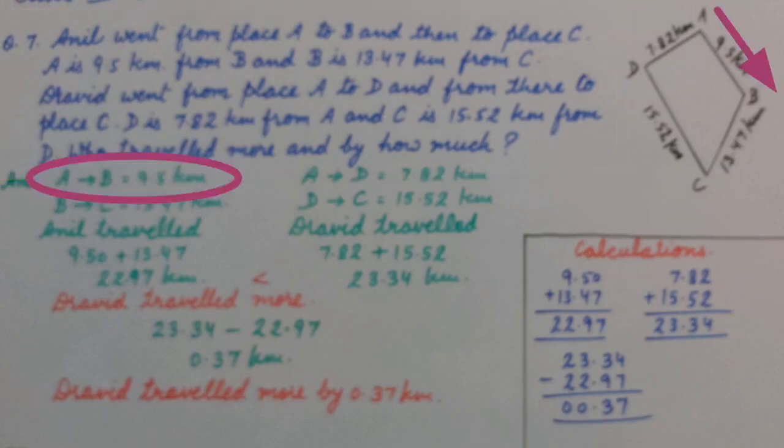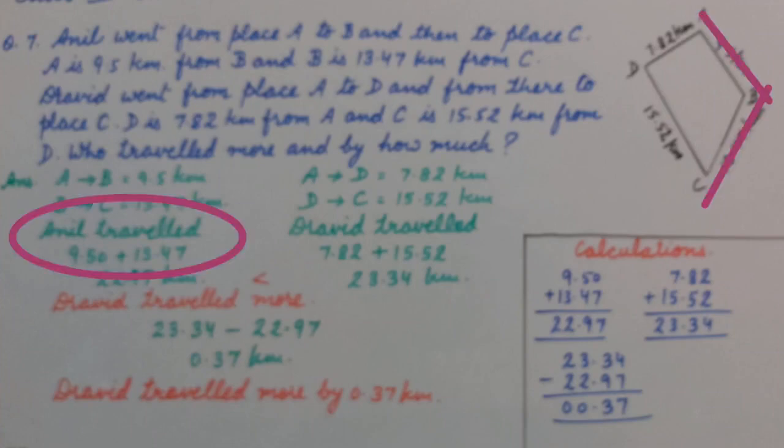Distance from A to B is 9.5 km and B to C is 13.47 km. So Anil travelled 9.5 plus 13.47, that is 22.97 km.